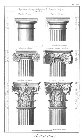Dodecastyle: a temple where the portico has twelve columns in front, as in the portico added to the temple of Demeter at Eleusis, designed by Philo, the architect of the arsenal at the Piraeus.